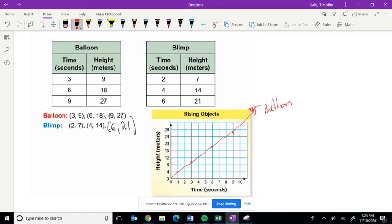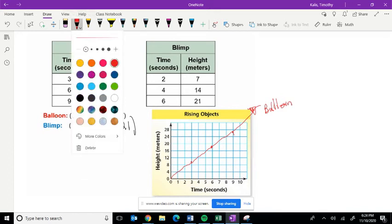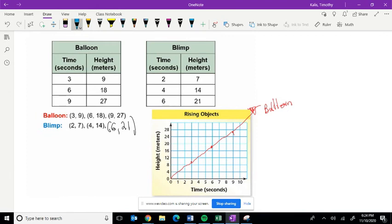Now, we're going to do the blimp. We're going to graph the blimp. So our first ordered pair is 2, 7.